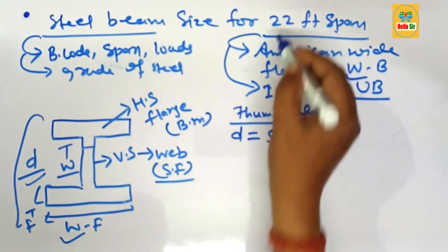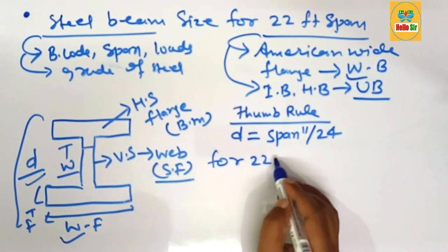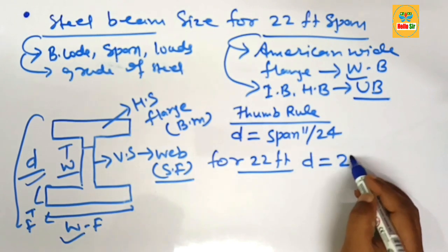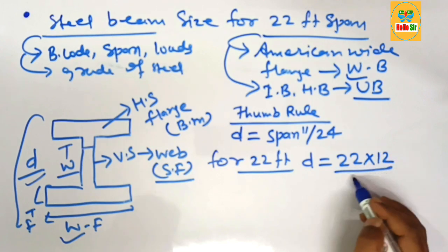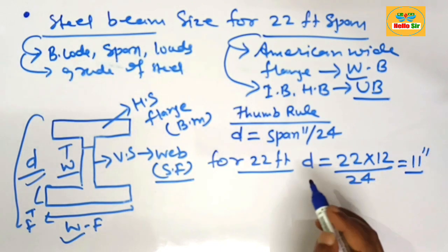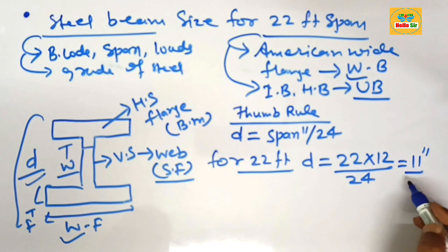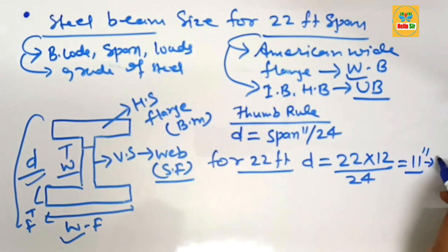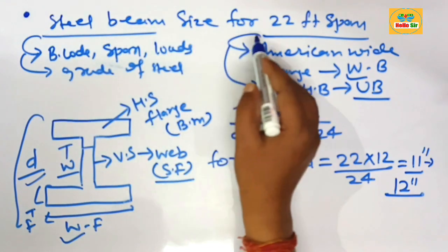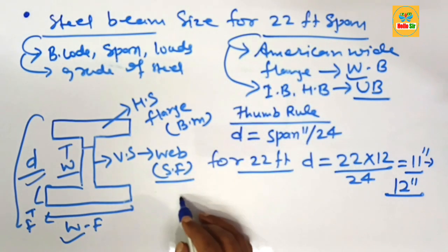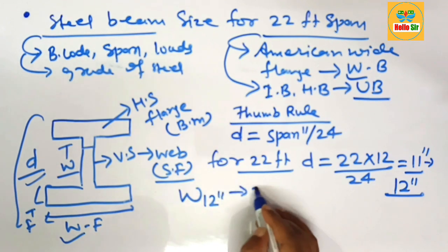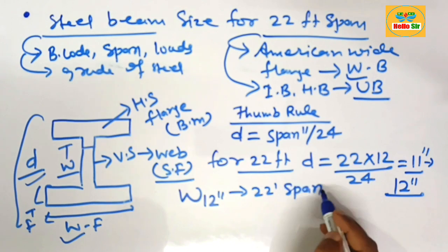For a 22-foot span, the depth should be calculated as: 22 multiplied by 12, divided by 24, which comes to about 11 inches. Since the American wide flange beam is not available in 11-inch depth, it comes in a 12-inch depth. So for a 22-foot span, you need an American wide flange beam — W12 — which is a 12-inch depth beam.